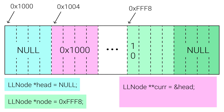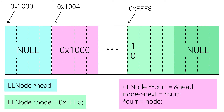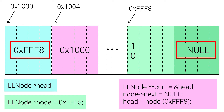First we have our head currently pointing to null because our linked list is empty. We have our node pointing to fff8 where it resides, with a value of 10 and next set to null. Then we have a double pointer cur that points to head, so it has a value of 1000. We reach our while loop, but since the value cur points to is null it doesn't run. We skip the loop, set node->next to *cur, then set *cur to node. Since cur is pointing to head, *cur directly modifies head — we've just set our head to the address of the node we wanted to add, without needing edge case handling.